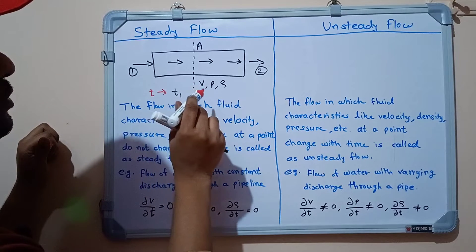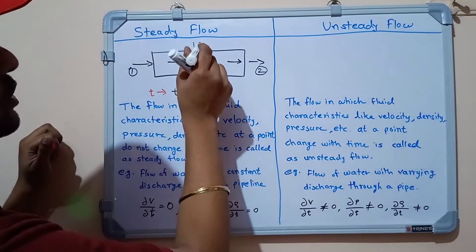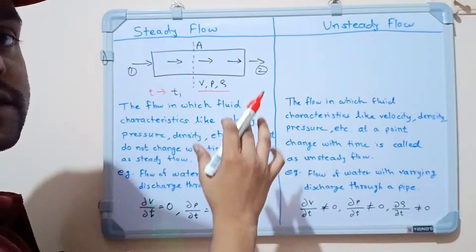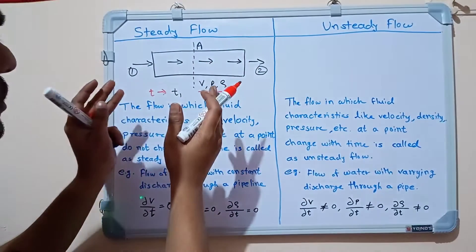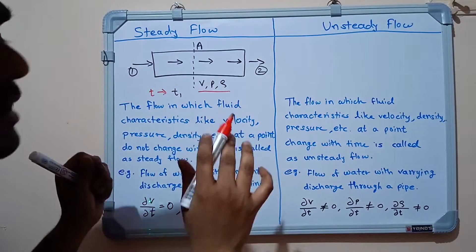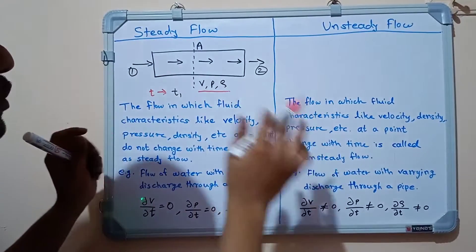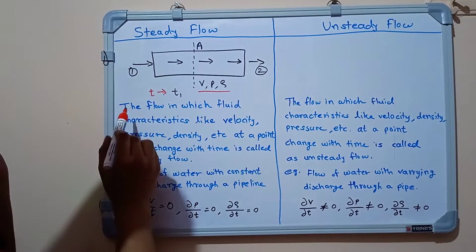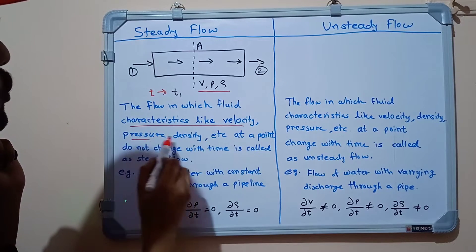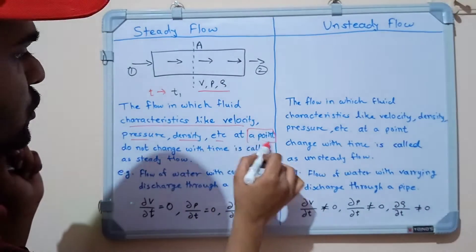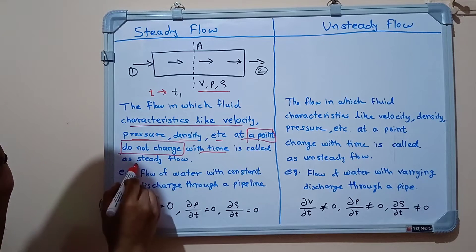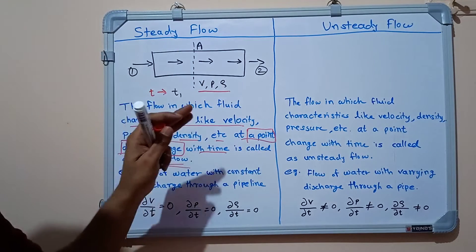At this point, even as time changes from t to t1, the fluid characteristics remain the same. From this example we understand that in this case fluid characteristics do not change with time. This is called steady flow. Definition: the flow in which fluid characteristics like velocity, pressure, density, etc. at a point do not change with time is called steady flow.